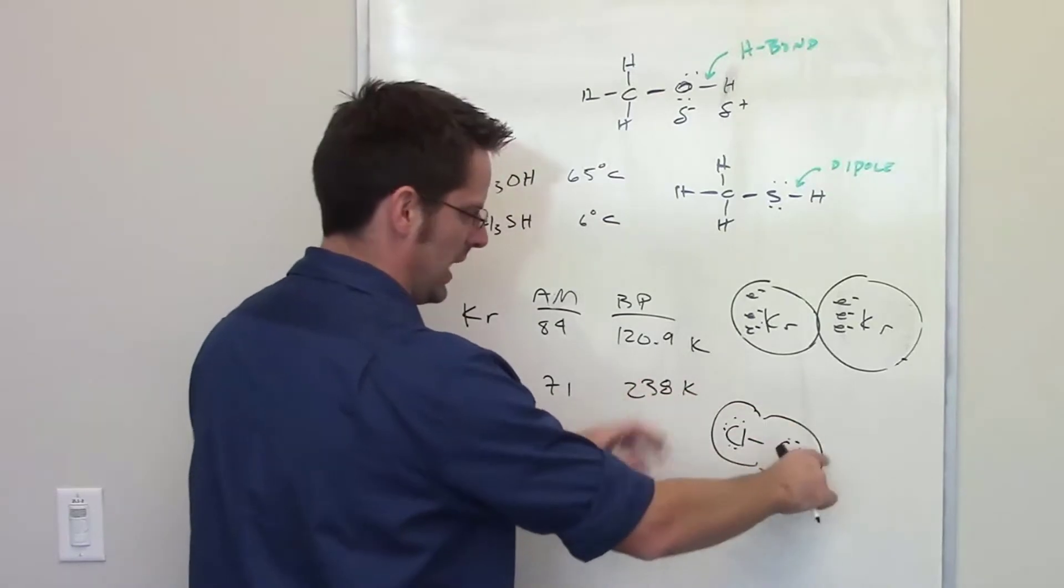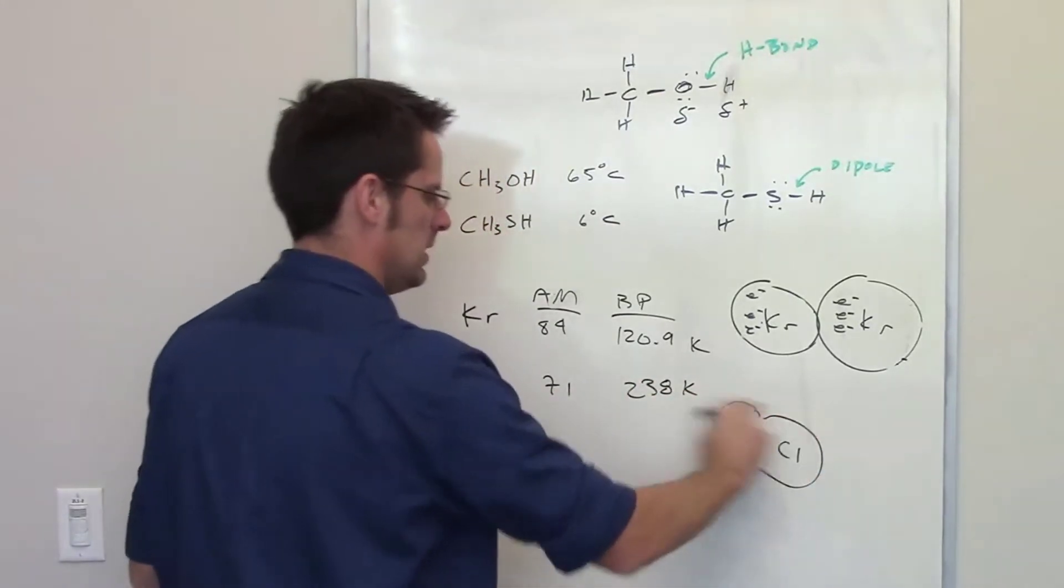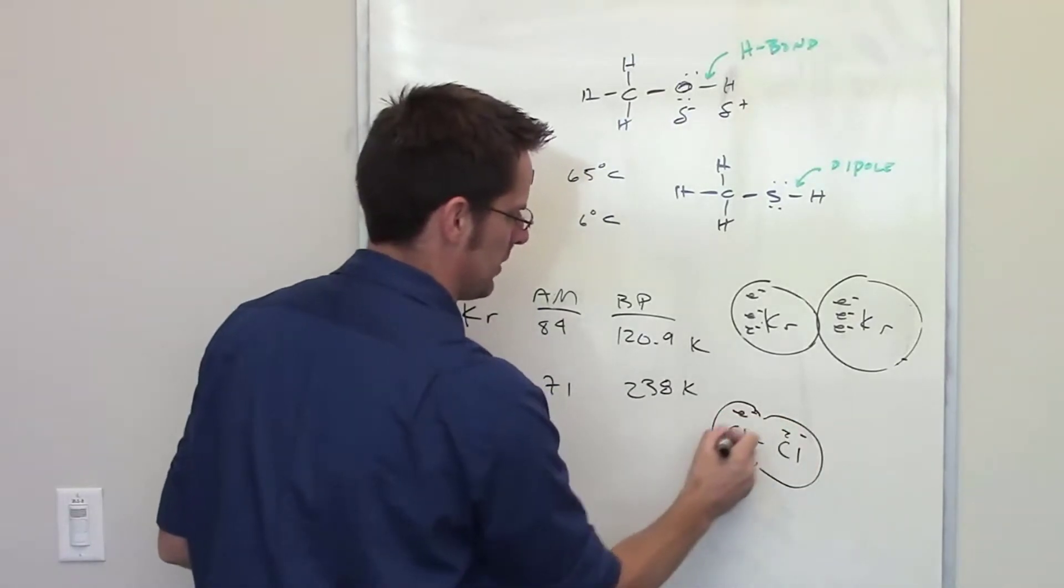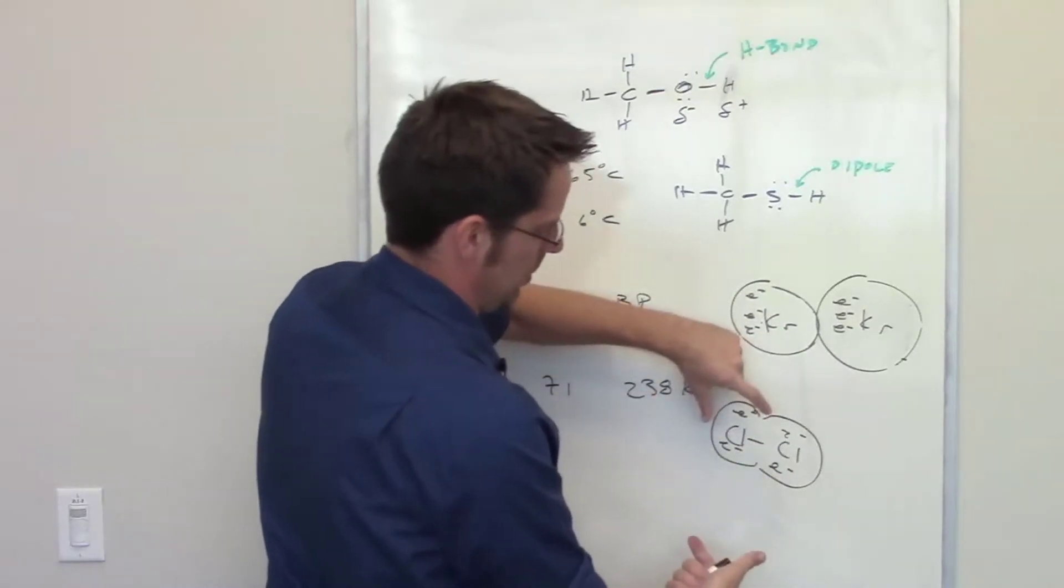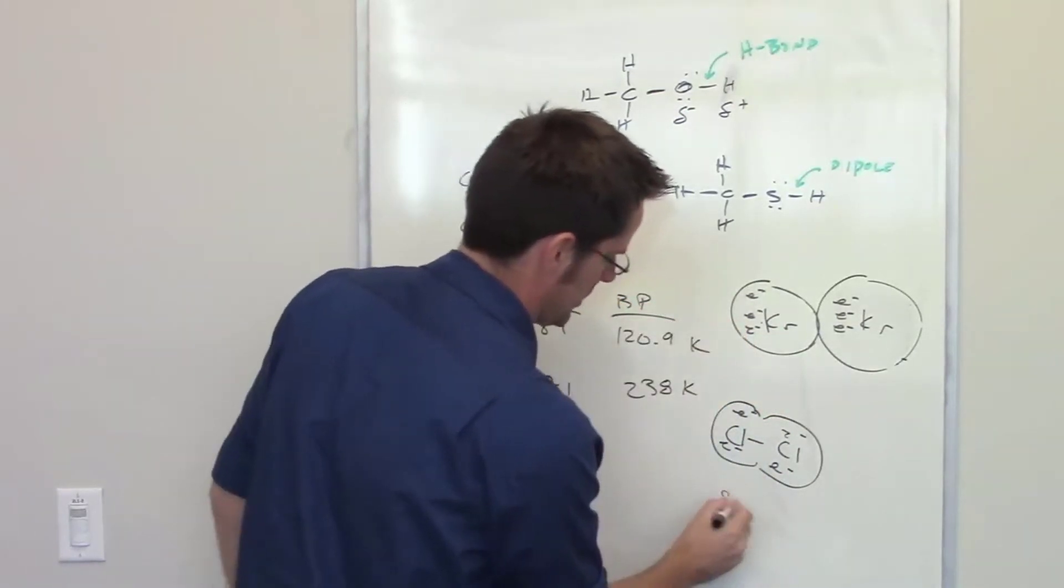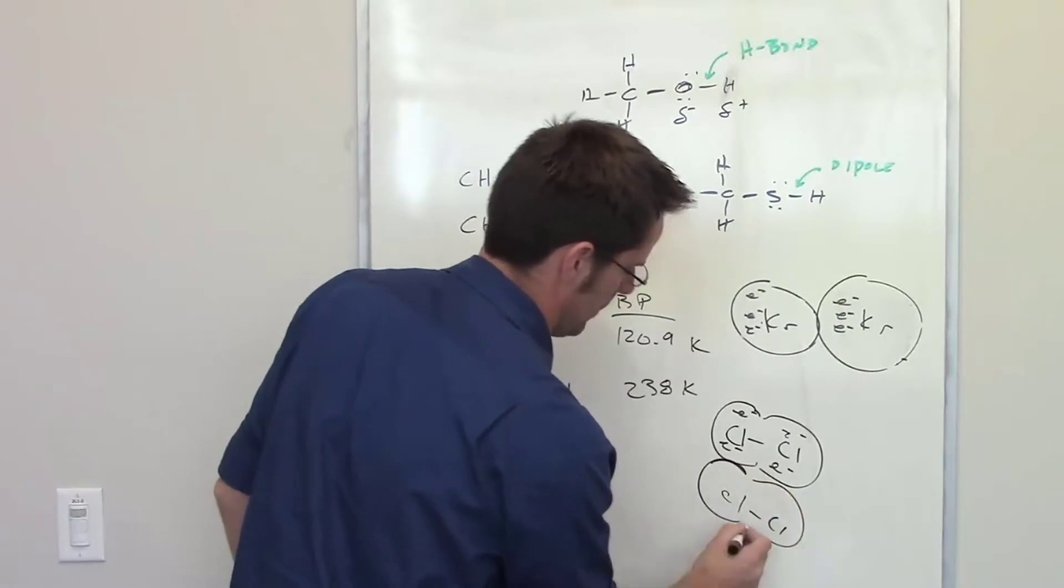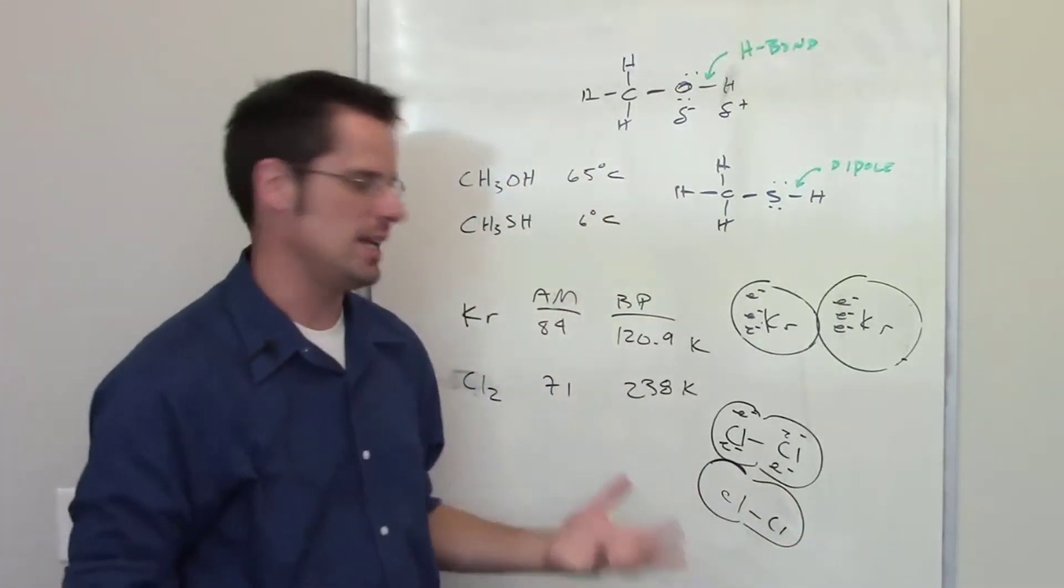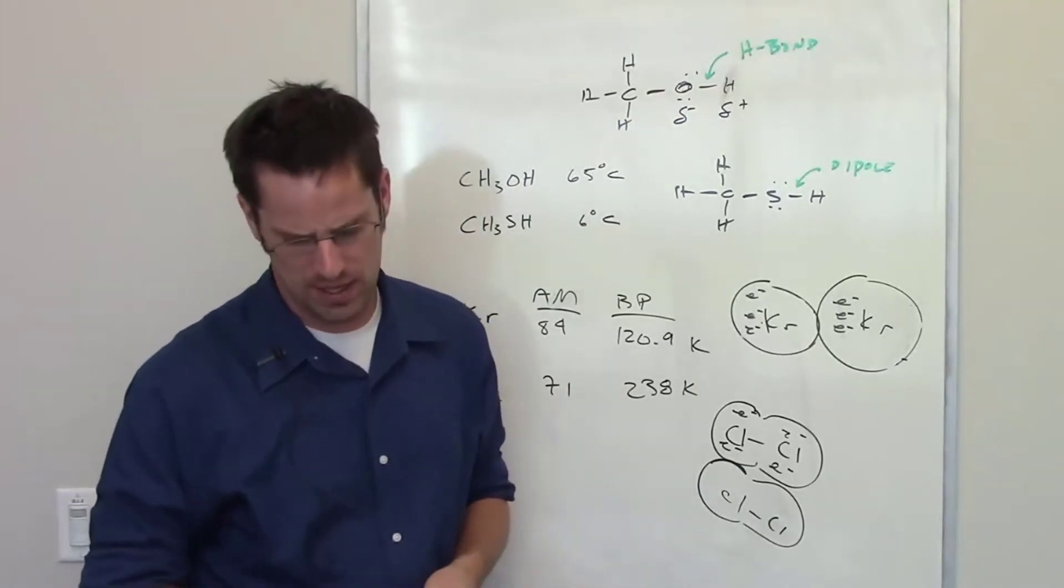And so it's much easier, because you have two atoms, to create a momentary dipole and have it stacked on top of a second molecule of Cl₂. So really the answer to this question is because of the number of atoms.